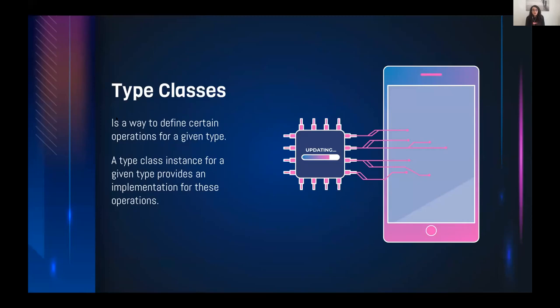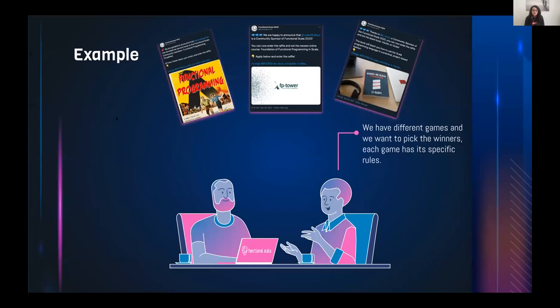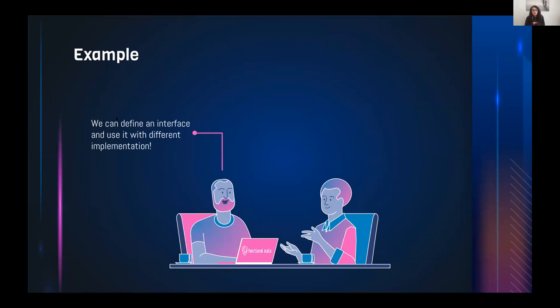A type class is a way to define certain operations for a given type. You want to add some features, and the type class instance for a given type provides an implementation for that operation. For example, at the Functional Scala conference there are different games, and the organizers want to automatically pick winners for each game — each game has its specific rule.